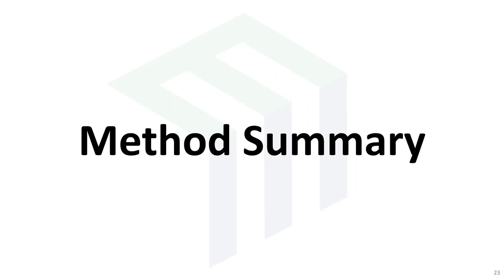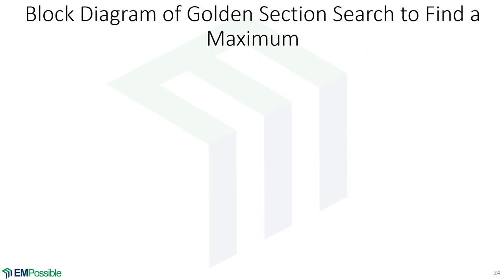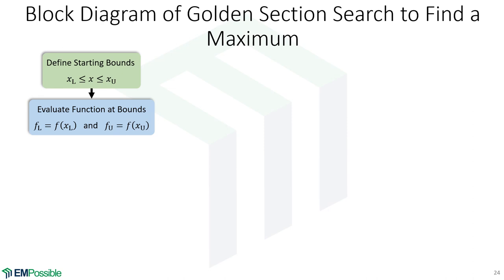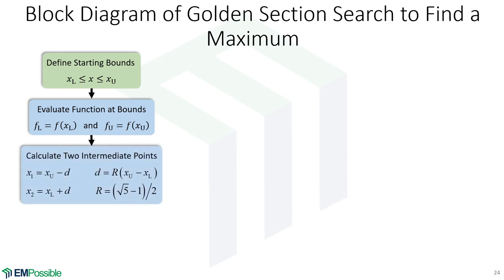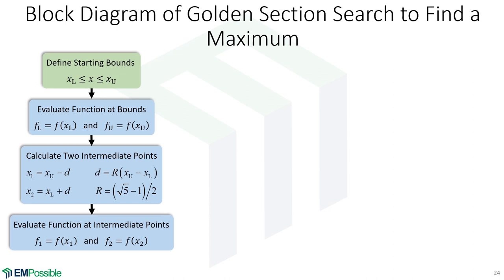Method summary. Let's summarize the method with a block diagram. The very first thing is to pick upper and lower bounds that span the extremum. We then evaluate the function at the bounds — remember this is the expensive part; that function call might be a simulation or other complicated calculation. From there we calculate two intermediate points using the golden ratio, then evaluate the function at those intermediate points. At this point we're initialized with four points and function values evaluated.